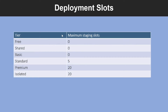Now let's understand what deployment slots are. Within a single Azure App Service web app, you can create multiple deployment slots. Each slot is a separate instance of that web app and has a separate host name. You can deploy a different version of your web app into each slot. Deployment slots are available only when your web app uses an App Service Plan in the standard, premium, or isolated tier.